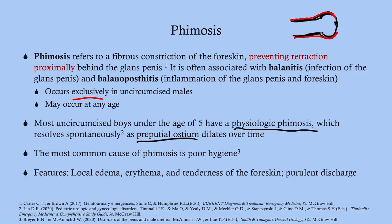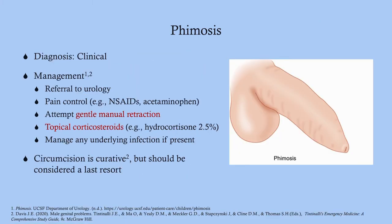The most common cause of phimosis is poor hygiene. Small infections can cause fibrosis, which makes the foreskin less compliant and more difficult to retract. Features, if present, include local edema, erythema, and tenderness of the foreskin, as well as purulent discharge — all pointing to a secondary infection, which can certainly happen with phimosis.